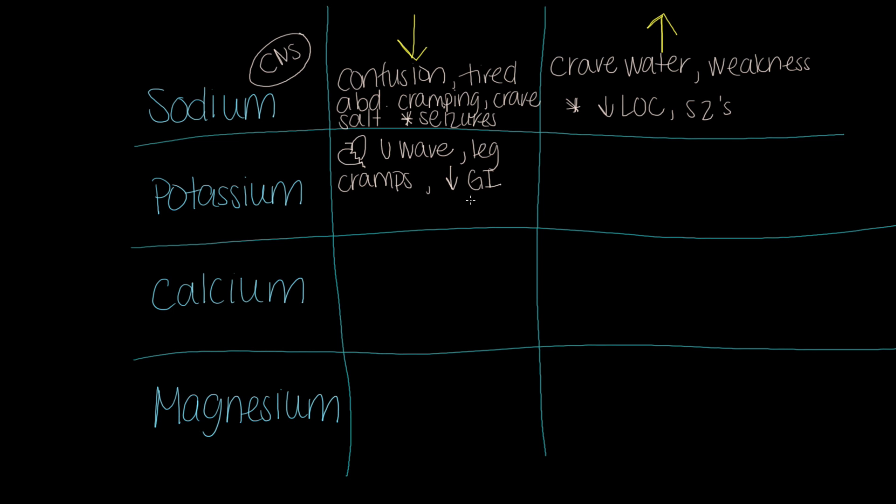With decreased GI motility, think about the things that would come along with that. Decreased bowel sounds, for instance, would be another thing that we would see as a result of that decreased GI motility. And then we're going to have some decreased deep tendon reflexes.